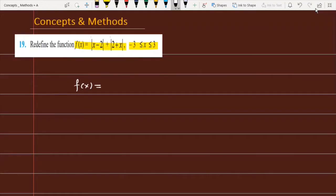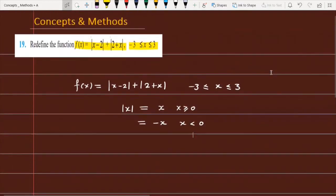The function provided is mod of x minus 2 plus mod of 2 plus x when x is greater or equal to minus 3 but less than equal to 3. To remove the modulus sign, we need the basic properties of modulus. The basic property: mod x equals x when x is greater or equal to zero, and equals minus x when x is less than zero. I suggest you read the modulus properties beforehand to be more comfortable understanding this question.